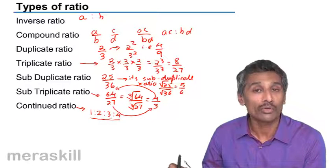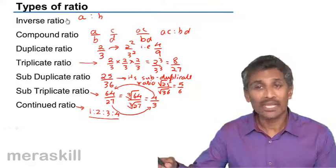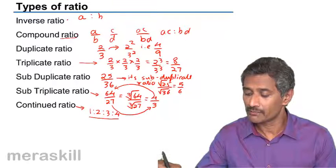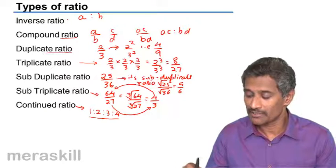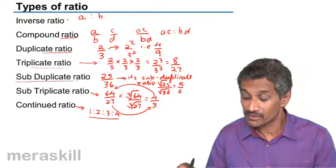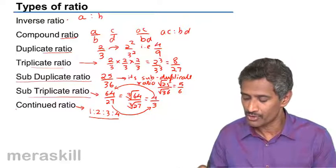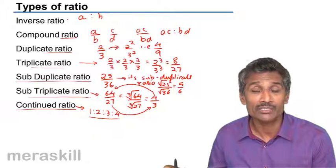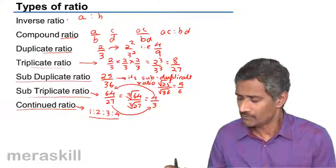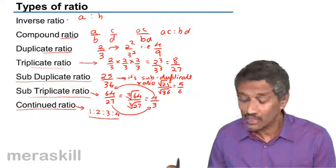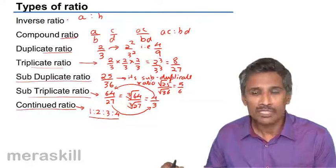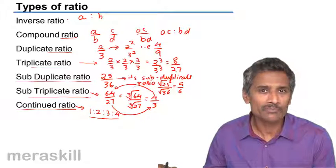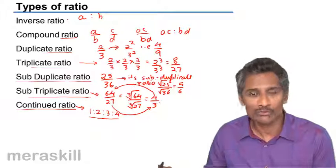Hence we have the inverse ratio, compound ratio, duplicate ratio, triplicate ratio, sub duplicate ratio, sub triplicate ratio, and the continued ratio. As I said, if there are more than two terms - three terms, four terms, five terms, or six terms - we call it as a continued ratio. With such a big list, maybe we could try to recap again once more with a few more live examples.